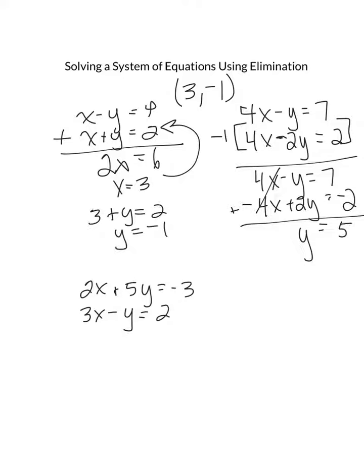I'm going to plug that in to the top equation here. So I'm going to get 4x minus 5 equals 7. I'm going to add 5 to both sides. I'll get 4x equals 12, divide by 4 and I'll get x equals 3. So the solution to this system is 3 comma 5.